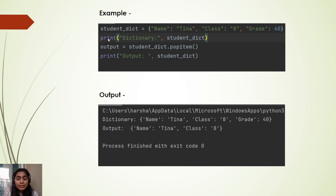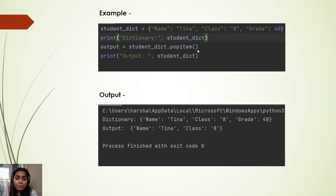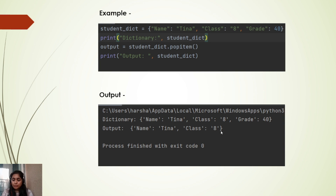Here again we have the same student dictionary. We can see that the grade key with value 40 is the last item of the dictionary. When we use student_dictionary.popitem(), it is going to remove or pop the last item, which is grade: 40, from the dictionary. We can see this result in the output.